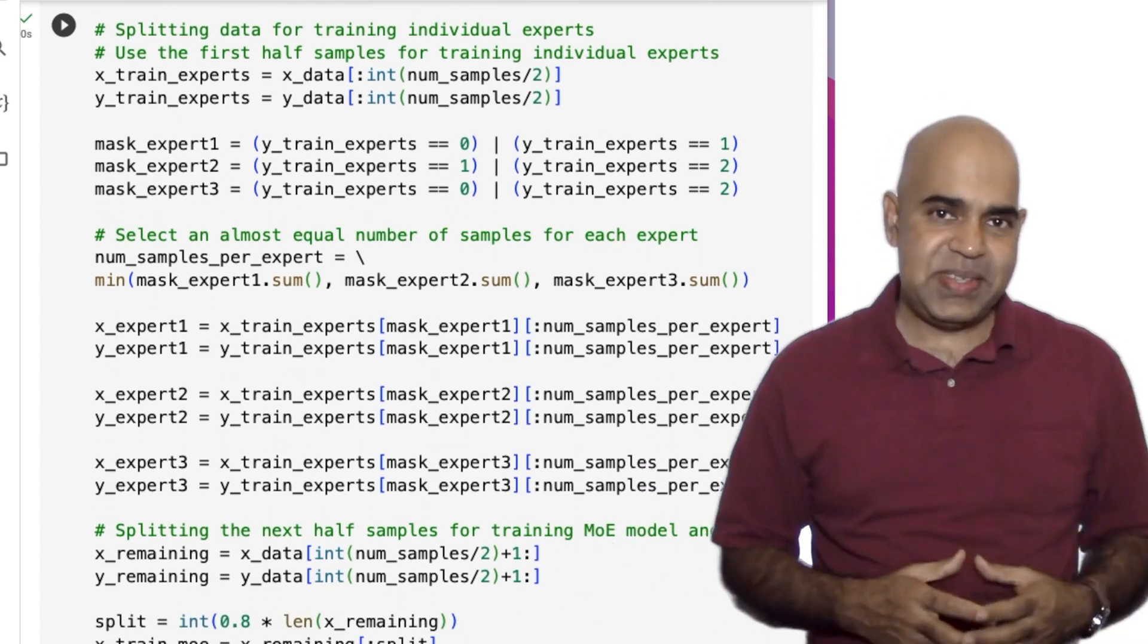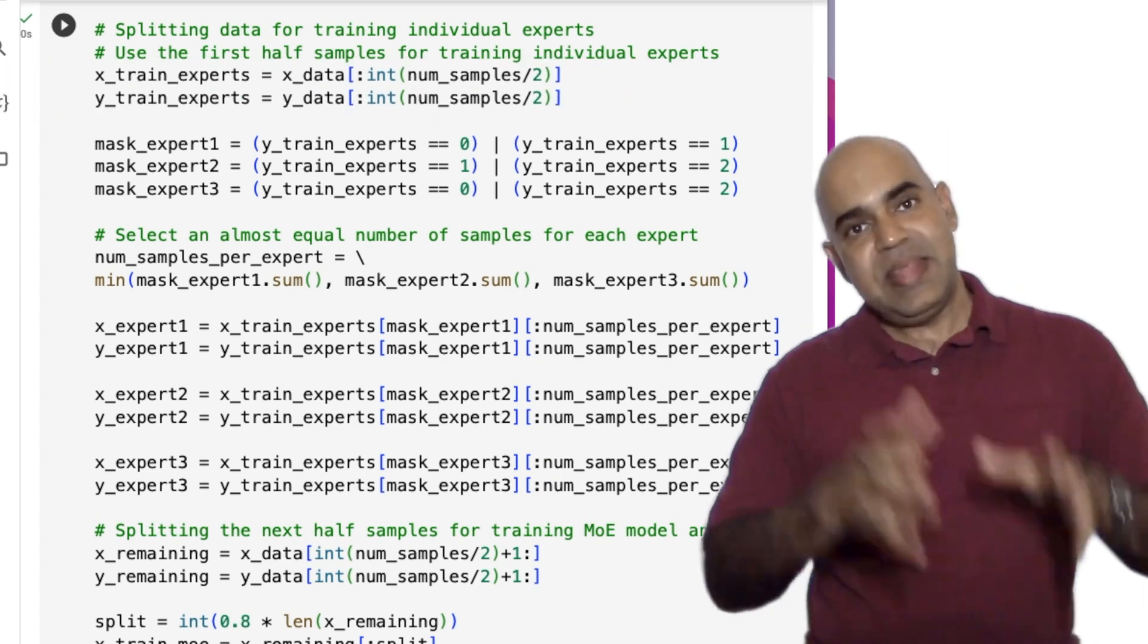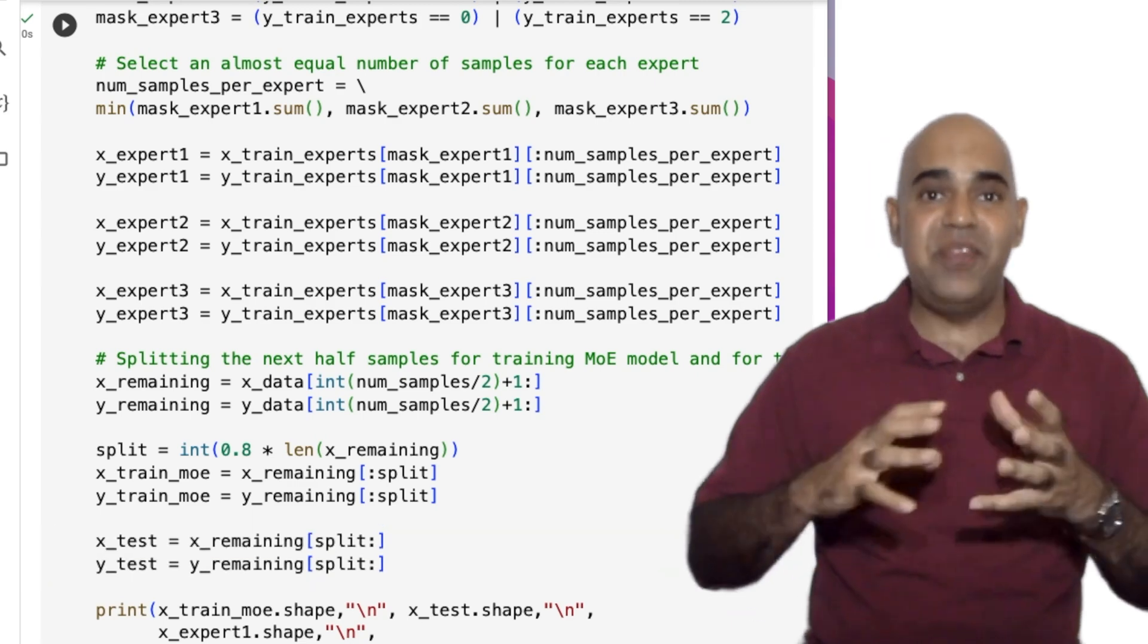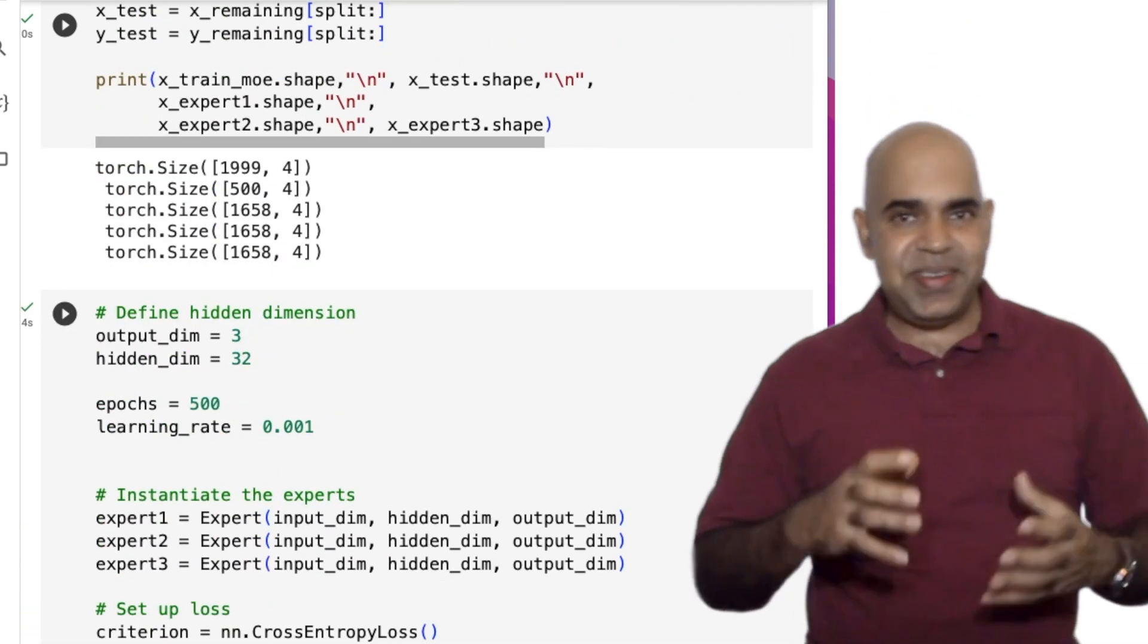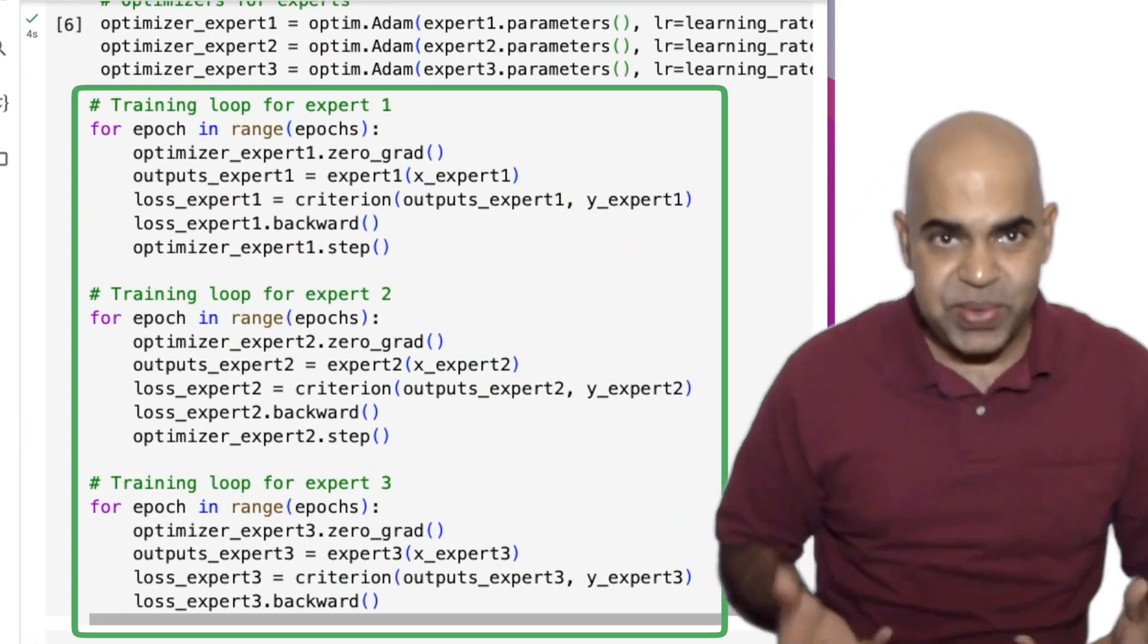Out of 5000 samples, we will use the first half for experts training only. The next half of the data will be used for training and testing of the mixture of experts. We initiated the three experts and trained them using the data chunks we designed.